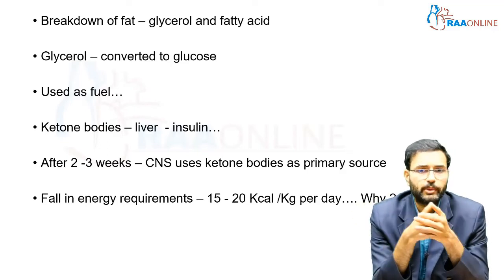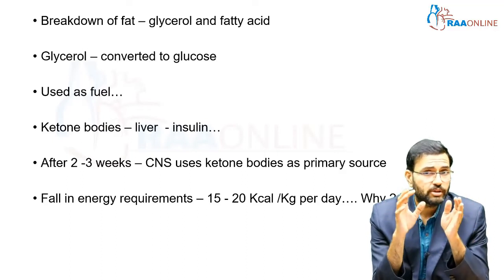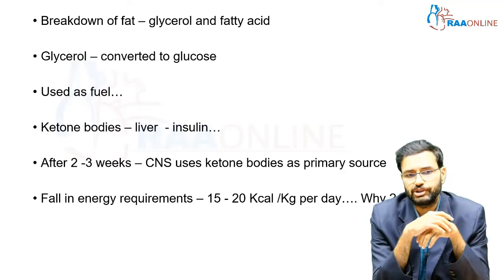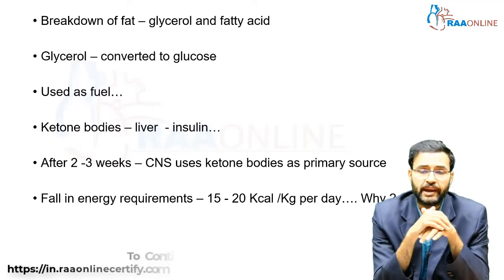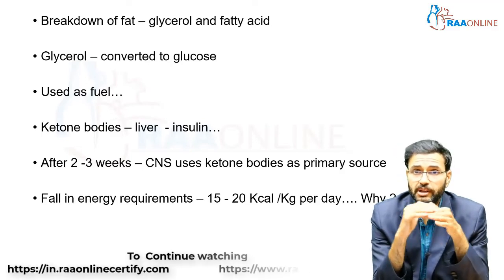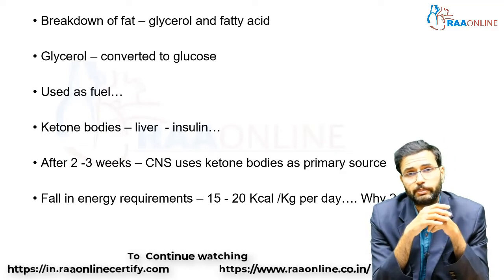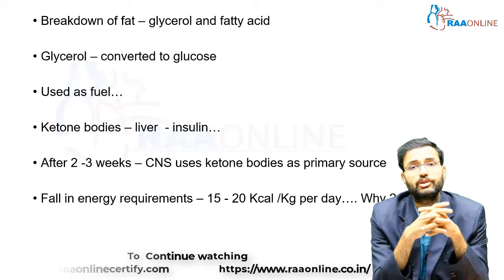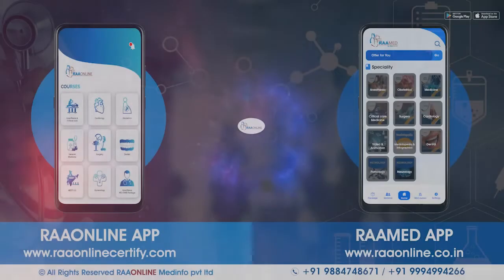After two to three weeks of starvation, the CNS starts using ketone bodies as a primary source of energy. If this process proceeds further, the energy requirement in an adult falls to about 15 to 20 kilocalories per kilogram body weight per day, because of reduced peripheral conversion of T4 to T3.